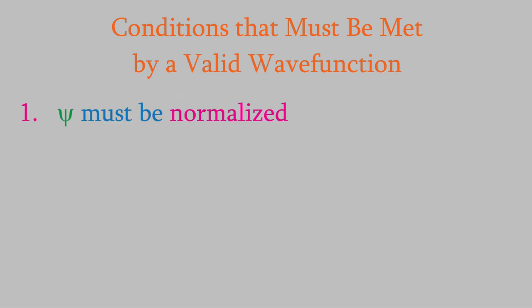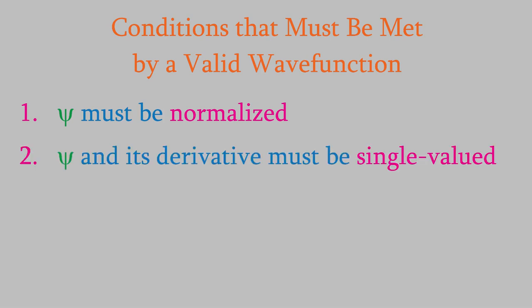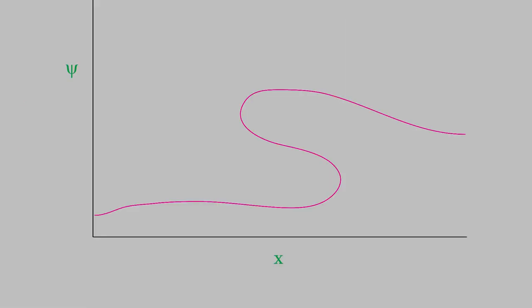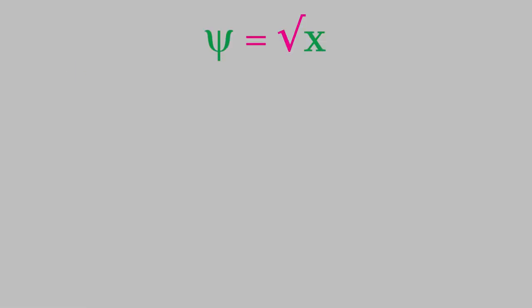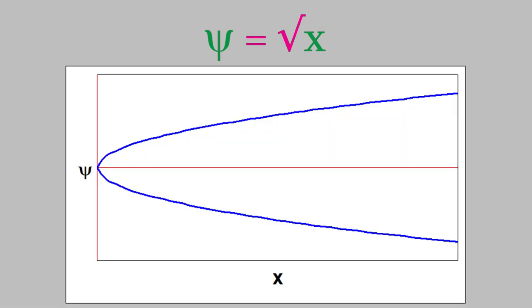The second condition is that both the wave function and its derivative must be single-valued — at any given point, the wave function can only have one value. For example, ψ = √x is invalid because it gives both positive and negative values for most inputs (e.g., at x = 4, ψ could be both +2 and −2). The derivative of the wave function must also meet this condition.